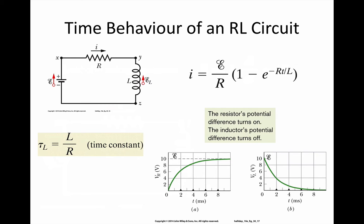And since the potential difference across the inductor must equal the supply minus the potential difference across the resistor, we can see that as the potential across the resistor rises, the potential across the inductor drops to zero.